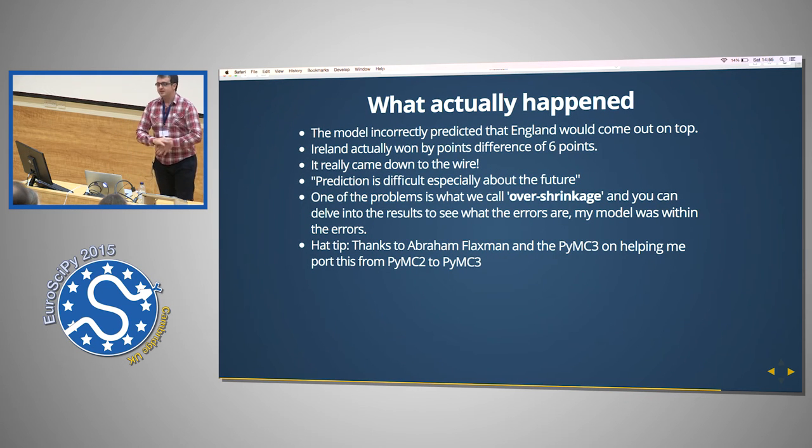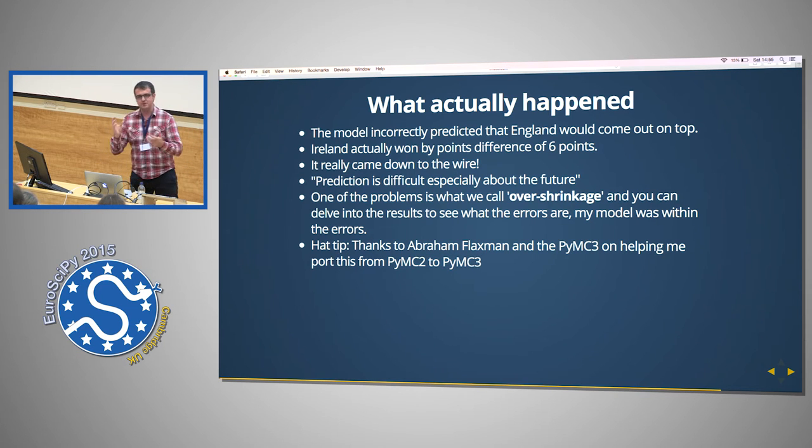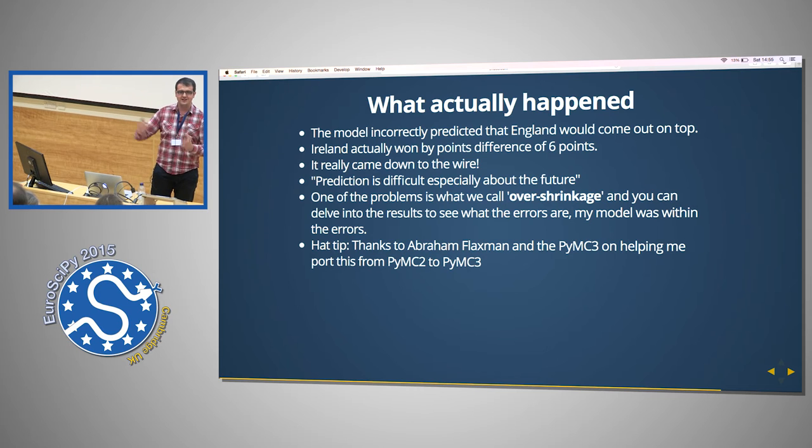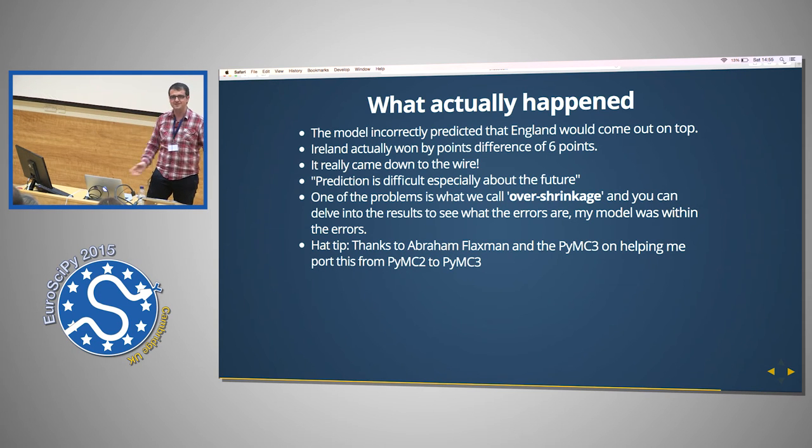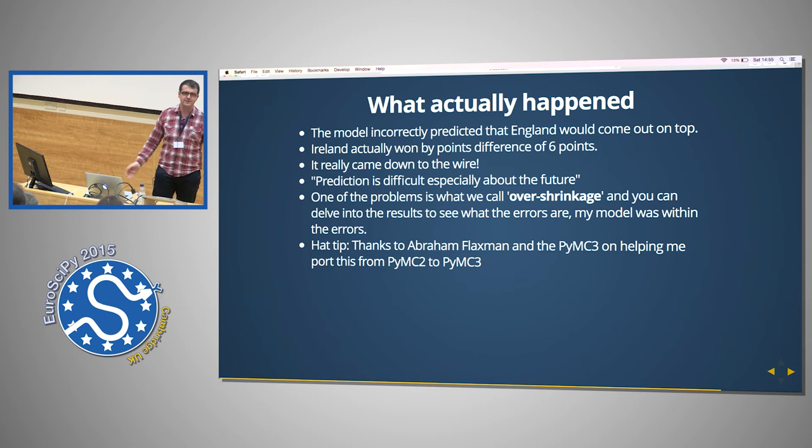What's actually happened, right? The model incorrectly predicted that England would come out on top. Ireland actually won by a points difference of six points. I really came down to about the last match. Prediction is difficult, especially about the future. One of the problems is what we call over-shrinkage, and you can check my GitHub, that if you have like too many outliers, you wrongly predict them and all these sort of things. So there's all sorts of interesting ways. So you could create a more complicated model, but I wasn't allowed. It's sort of taken away from the computer.